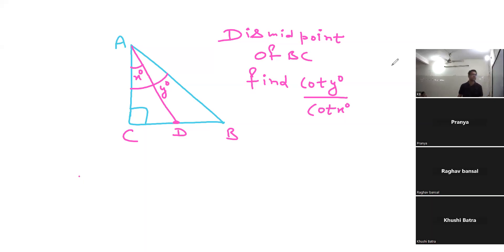I am going to ask my question. We have a right triangle ACB where D is the midpoint of BC, angle C is 90 degrees, and we have angles x and y as shown in the diagram. Find cot y upon cot x. What is cot y upon cot x?